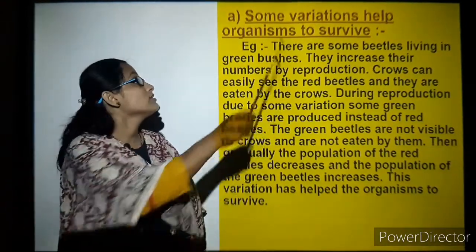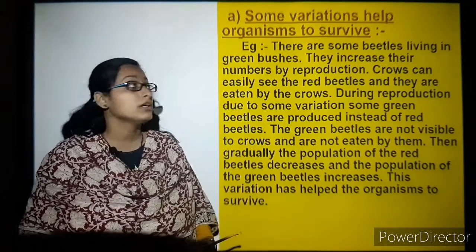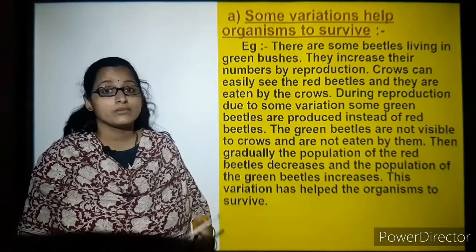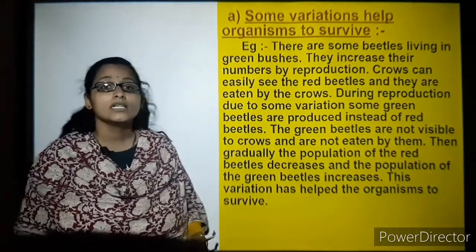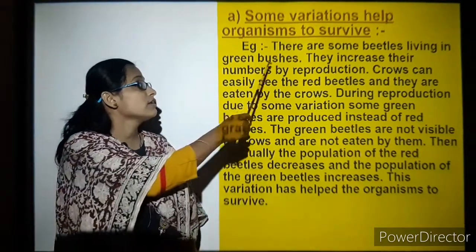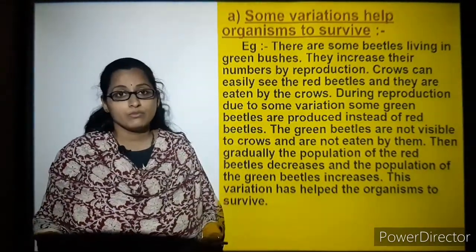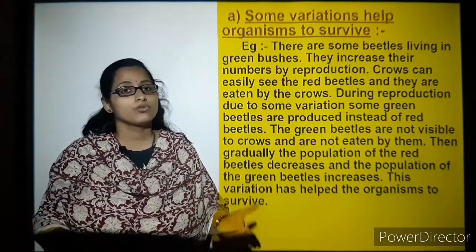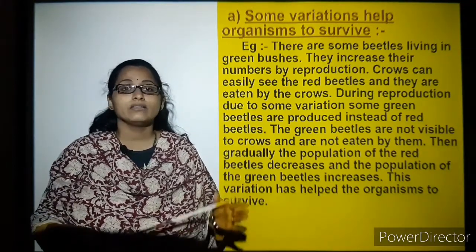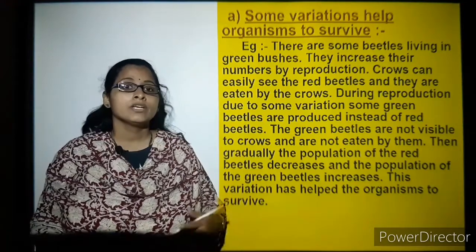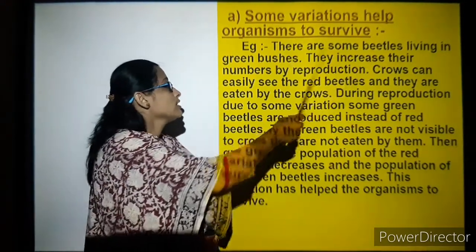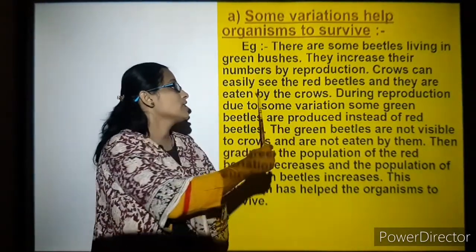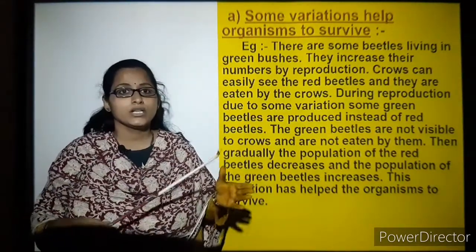Some variations help organisms to survive. Beetles living in green bushes that are green in color cannot be seen by other insects or birds feeding on them. So they increase their numbers through reproduction. Crows can easily see red beetles, and in green bushes, red and blue beetles are visible while green beetles are not.